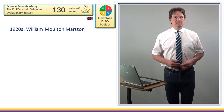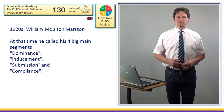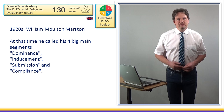At that time he called his four main segments dominance, inducement, submission, and compliance. By that, William Marston, already in the 1920s, laid the basic foundation for his later DISC model.